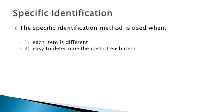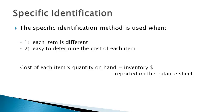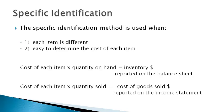Before we get to our discussion on FIFO, LIFO, and weighted average, let's first talk about the specific identification method. The specific identification method is used when it is easy to determine the cost of each item on hand. This occurs when each of the items are visibly different. The cost of each item on hand at the end of the period is the total value of inventory reported on the balance sheet, and the cost of each item sold during the period is reported as total cost of goods sold. Companies that sell high-dollar items with different characteristics generally use the specific identification method. Examples include auto dealerships and jewelry stores.